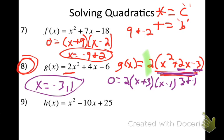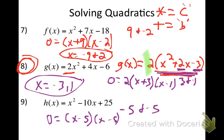Number 9: what multiplies to get 25 and adds to get negative 10? Negative 5 and negative 5. I factor it: zero equals (x-5)(x-5). My answer is x equals 5. Because both factors are the same, this one only has one answer.